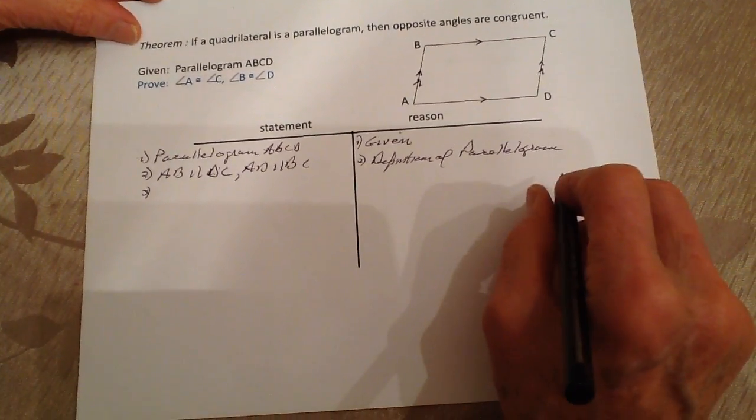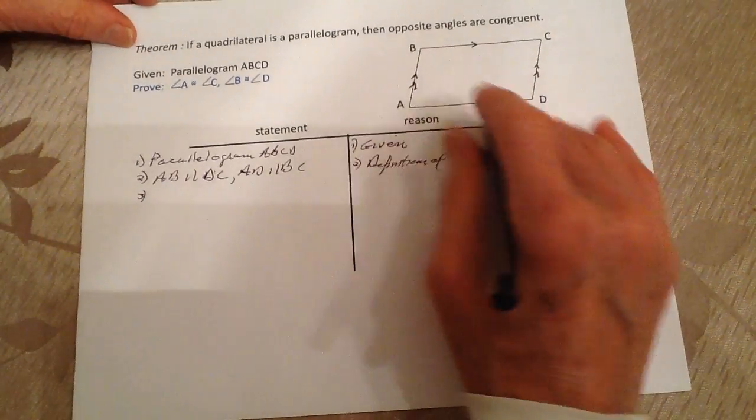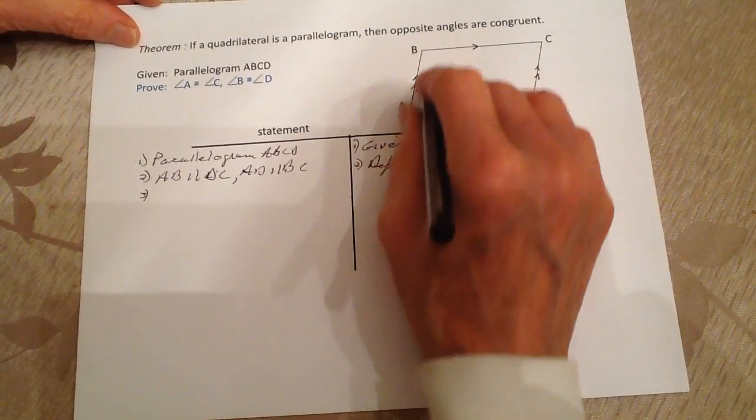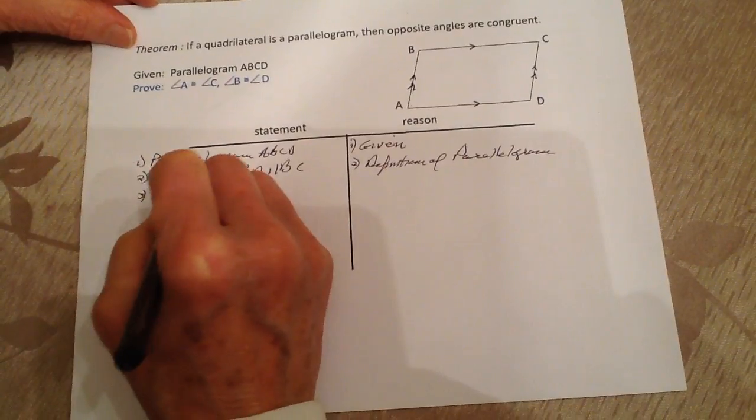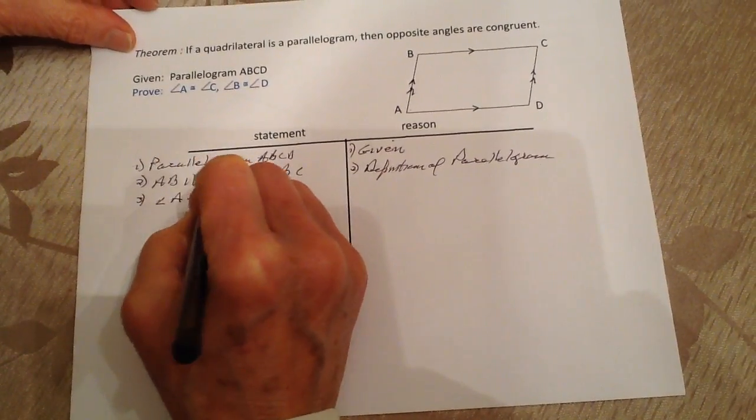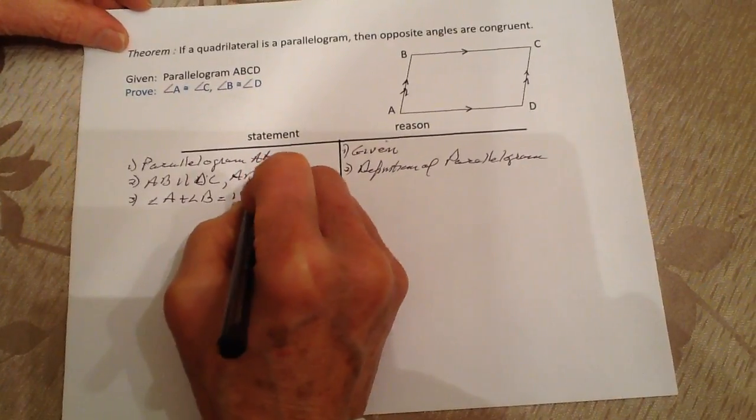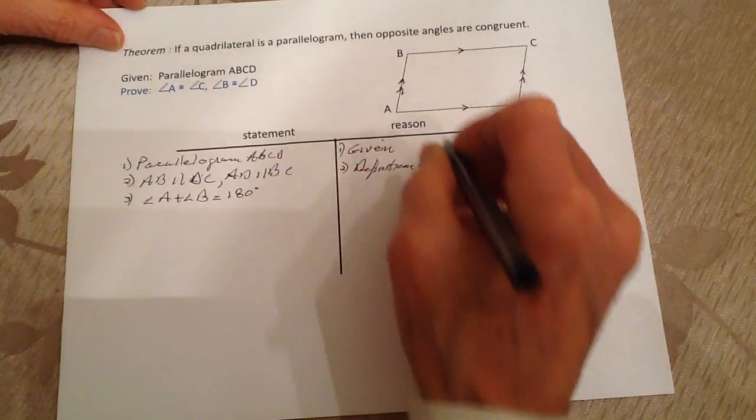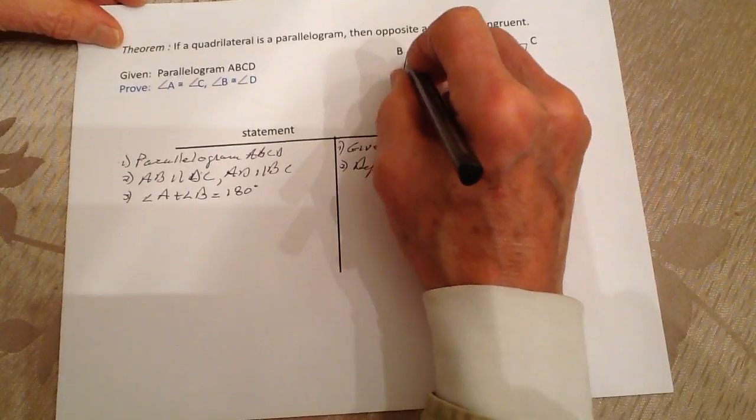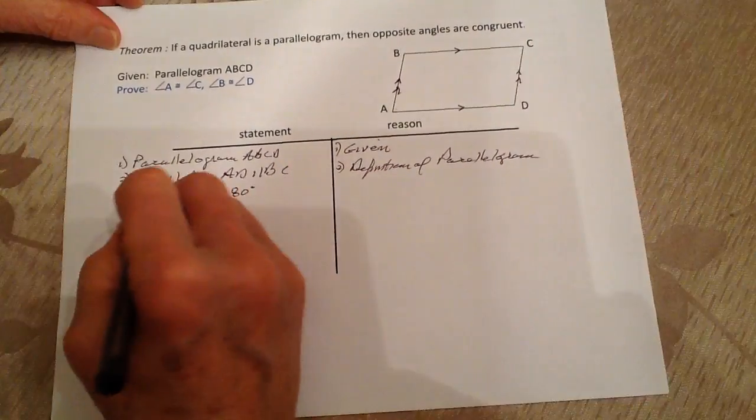Next, we know that if this is a parallelogram, then if I add angle A plus angle B, that's going to be equal to 180 degrees. Likewise, if I add angle B plus angle C, that equals 180 degrees.